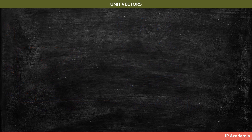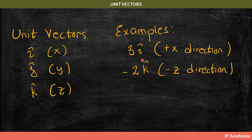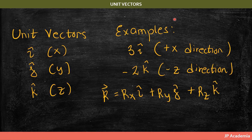Given that direction and components are important when talking about vectors, it is important to discuss unit vectors. In Cartesian coordinates, we can express the components of a vector using unit vectors. All unit vectors have a magnitude of 1 and point along their respective axis: i hat along the x axis, j hat along the y axis, and k hat along the z axis. We can also express the resultant vector R using its components written in terms of these unit vectors along x, y, and z.